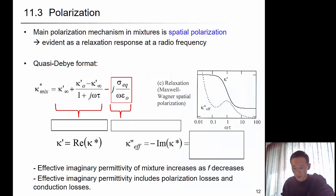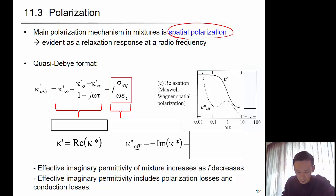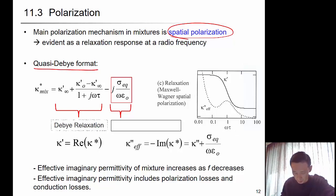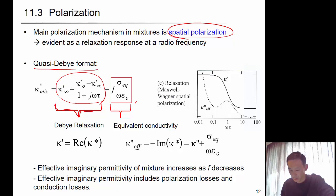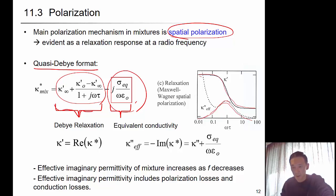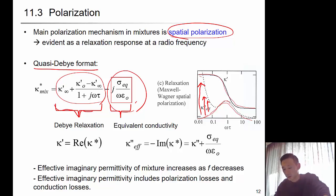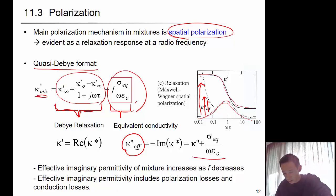The main polarization mechanism in mixtures is spatial polarization, evident as a relaxation response at radio frequencies. In the quasi-Debye format, there is one additional term — the equivalent conductivity. Before, it was just the standard Debye relaxation, but now we add an effective conductivity term. Because of this effective conductivity (DC or AC conductivity) term, the loss captured in the imaginary permittivity becomes higher. The effective imaginary permittivity kappa double-prime is kappa double-prime plus this conductivity divided by frequency.